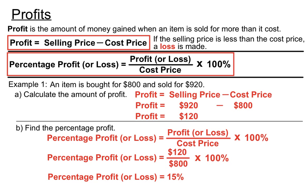Our percentage profit in this case is fifteen percent. If you made a loss, that loss amount would go on top, over the cost price. In this case we made a fifteen percent profit — buying something for $800 and selling it for $920.